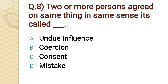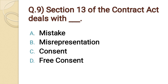Question number eight: Two or more persons agreed on the same thing in the same sense — it is called dash dash. Option A: undue influence. Option B: coercion. Option C: consent. Option D: mistake. The correct option is option C: consent.